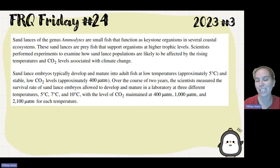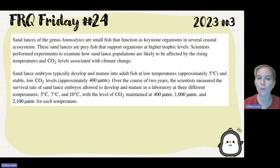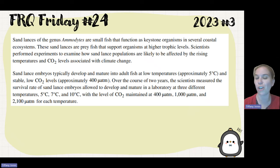Sandlances are small fish that function as keystone organisms in several coastal ecosystems. These sandlances are prey fish that support organisms at higher trophic levels. Scientists perform experiments to examine how sandlance populations are likely to be affected by rising temperatures and carbon dioxide levels associated with climate change.